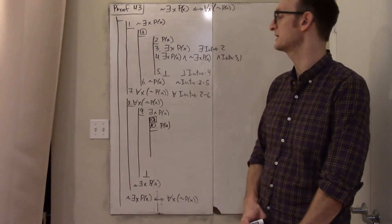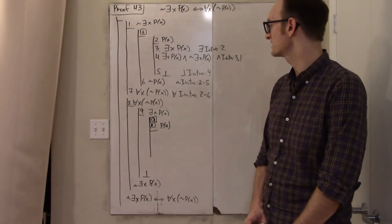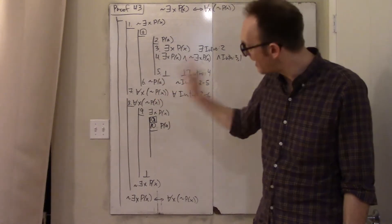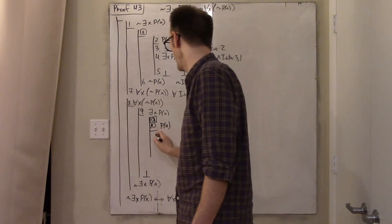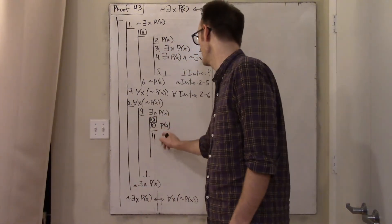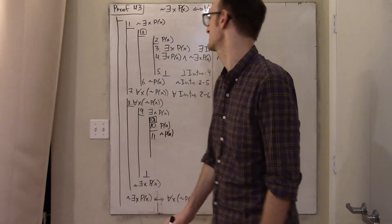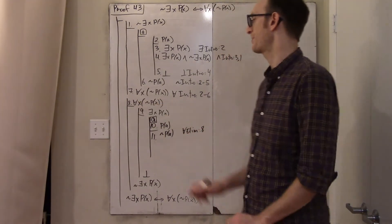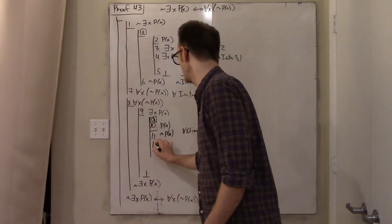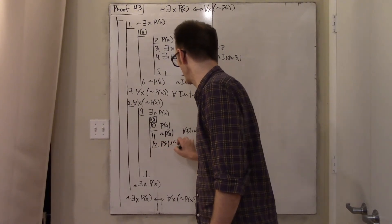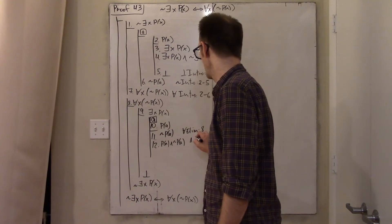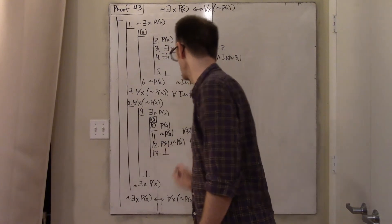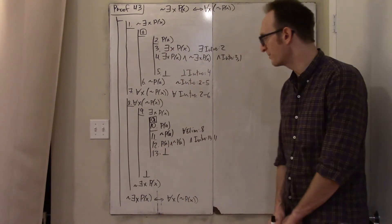Right away we see a problem: line eight says for everyone they're not pretty. Since a is someone I can now talk about, a is not pretty — universal elim, line eight. But I have that a is pretty and a is not pretty — that's a contradiction: and intro, lines ten and eleven.